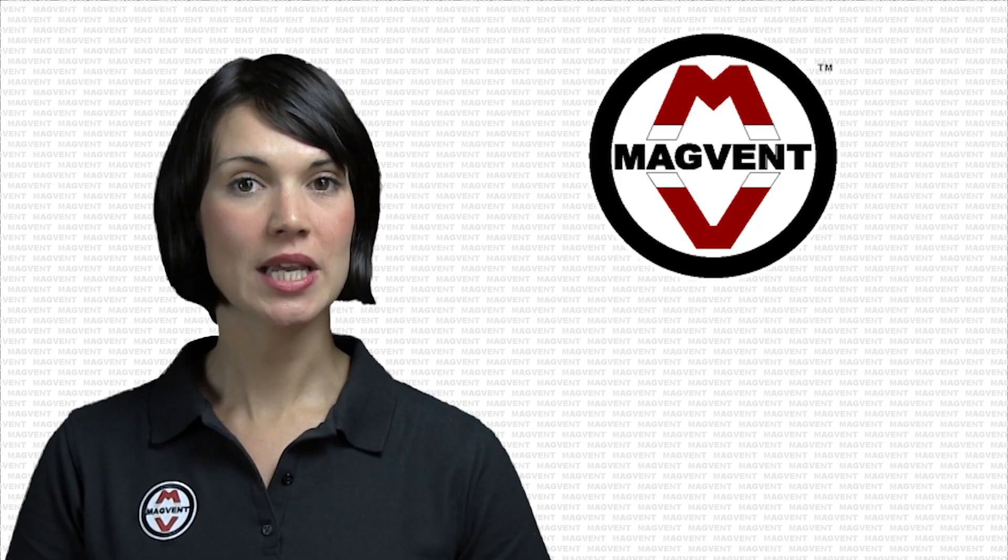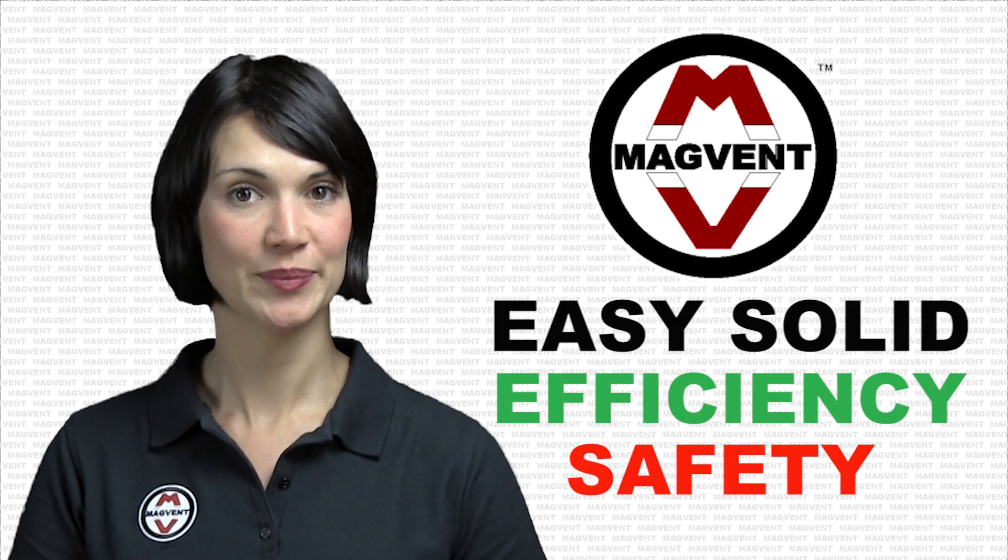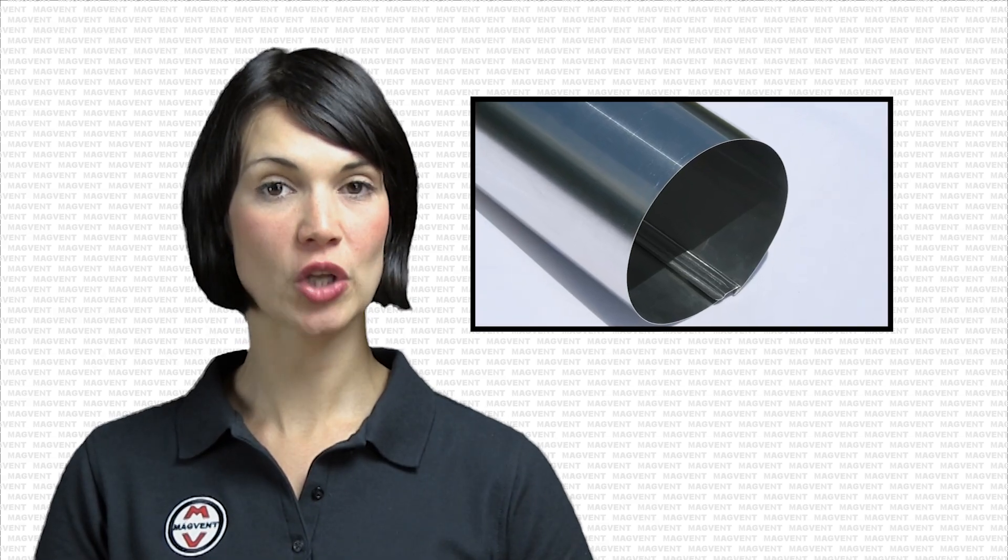MagVent gives you easy, solid installs that boost dryer efficiency and safety. MagVent allows you to run the entire duct path with rigid metal duct. Rigid metal duct has smooth interior walls that shed dryer lint and minimize turbulent flow inside the pipe, while the thick metal walls resist crushing, keeping your vent path unobstructed. Rigid metal vent is even capable of containing dryer fires in the less likely event they do occur, making your dryer more efficient and your home safer.